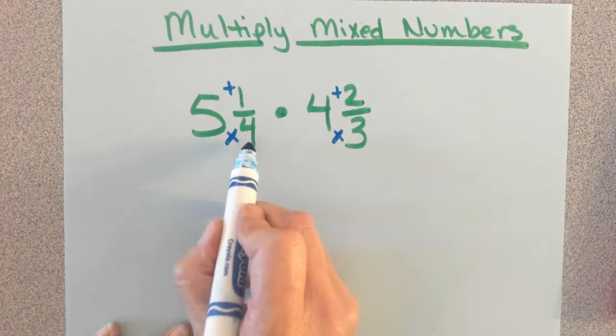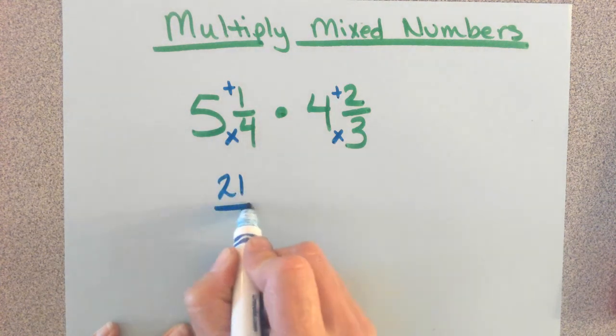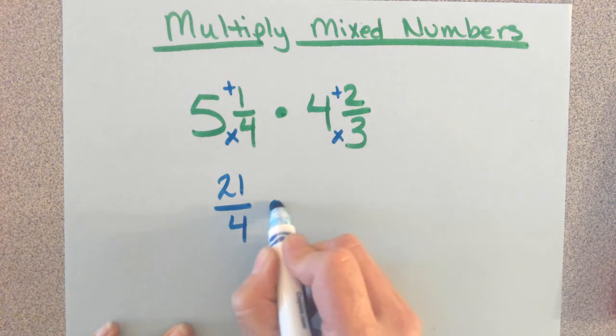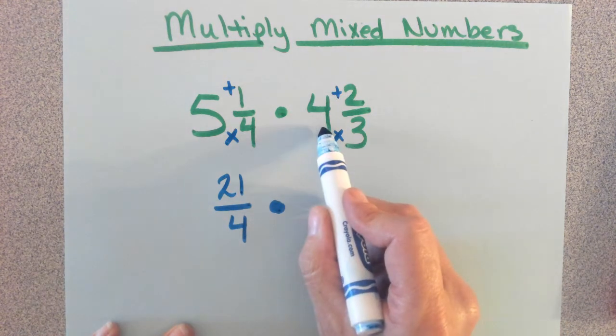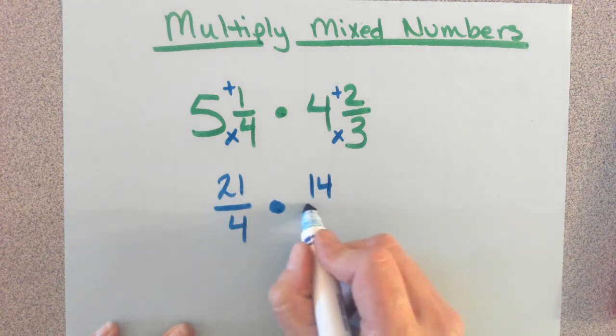So multiplication comes first. Five times four is twenty, plus one, twenty-one quarters, or fourths, times three times four is twelve, plus two is fourteen-thirds.